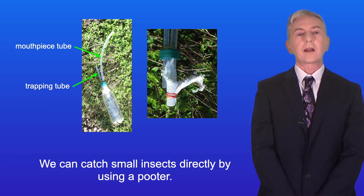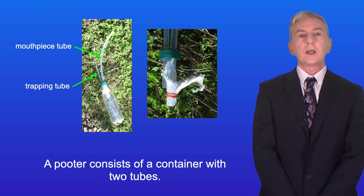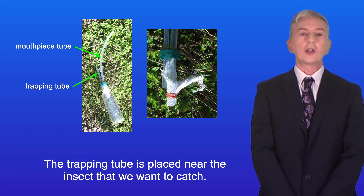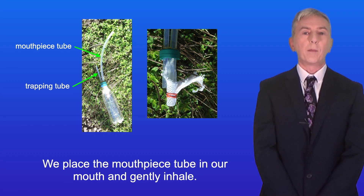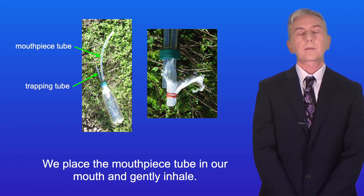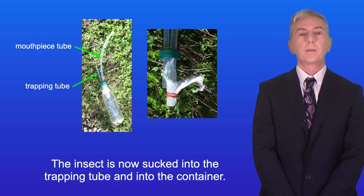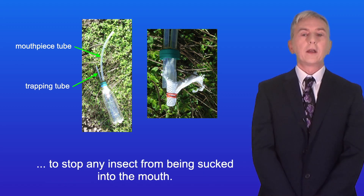We can catch small insects directly by using a pooter. A pooter consists of a container with two tubes. The trapping tube is placed near the insect that we want to catch. We place the mouthpiece tube in our mouth and gently inhale. The insect is now sucked into the trapping tube and into the container. The mouthpiece tube has a piece of cloth to stop any insects from being sucked into the mouth.